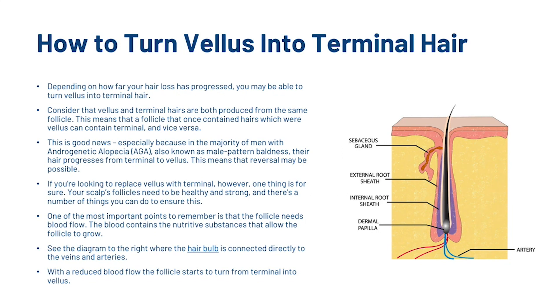So let's look at how you can actually turn vellus hairs into terminal hairs. Depending on how far your hair loss has progressed, you may be able to turn vellus into terminal hair. Consider that vellus and terminal hairs are both produced from the same follicle, meaning a follicle that once contained vellus hairs can contain terminal hairs and vice versa. This is good news especially because in the majority of men with androgenetic alopecia, also known as male pattern baldness, hair progresses from terminal to vellus — meaning reversal may be possible.